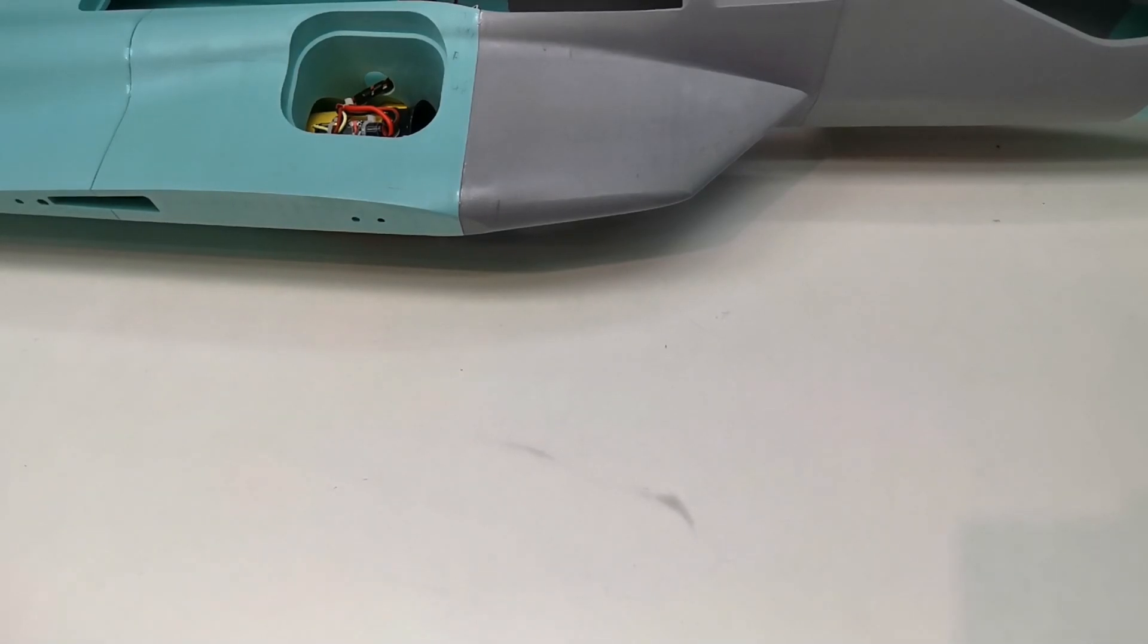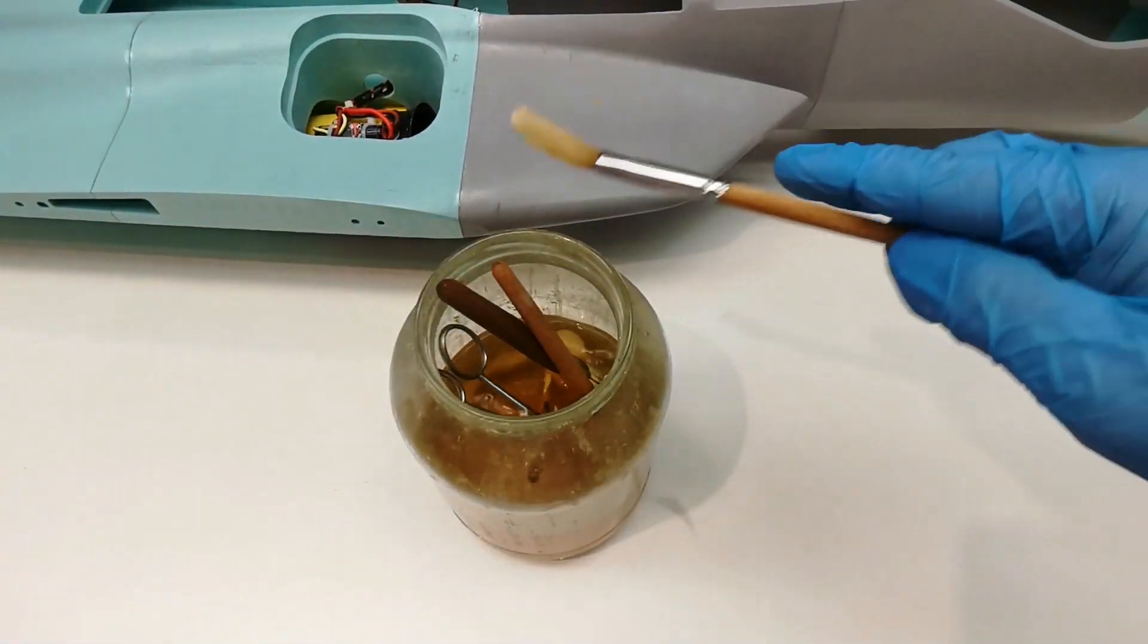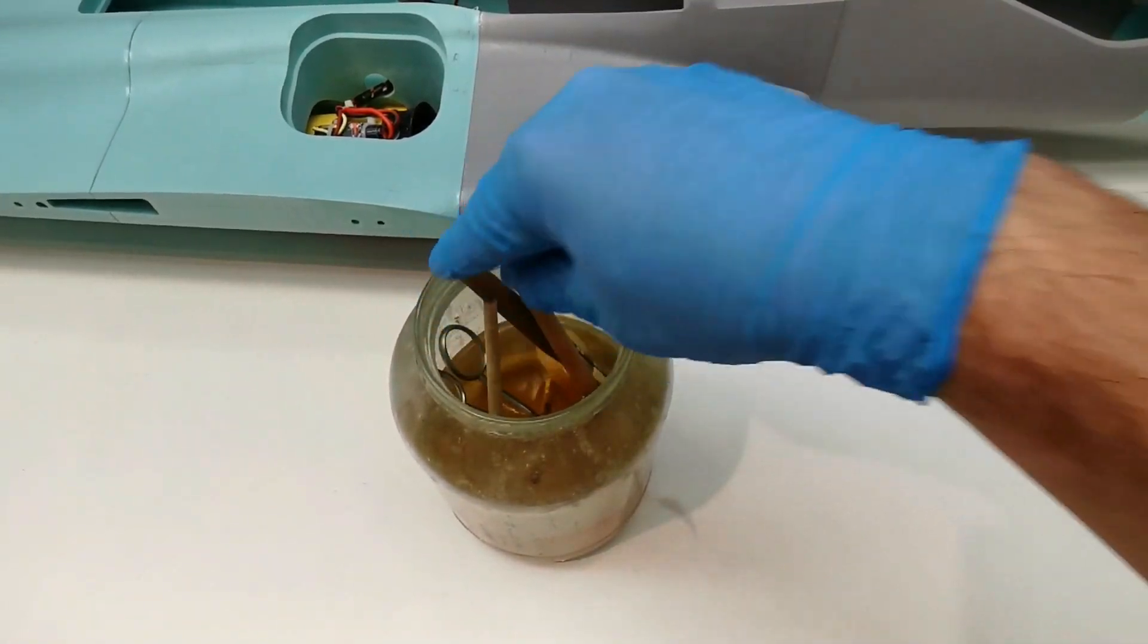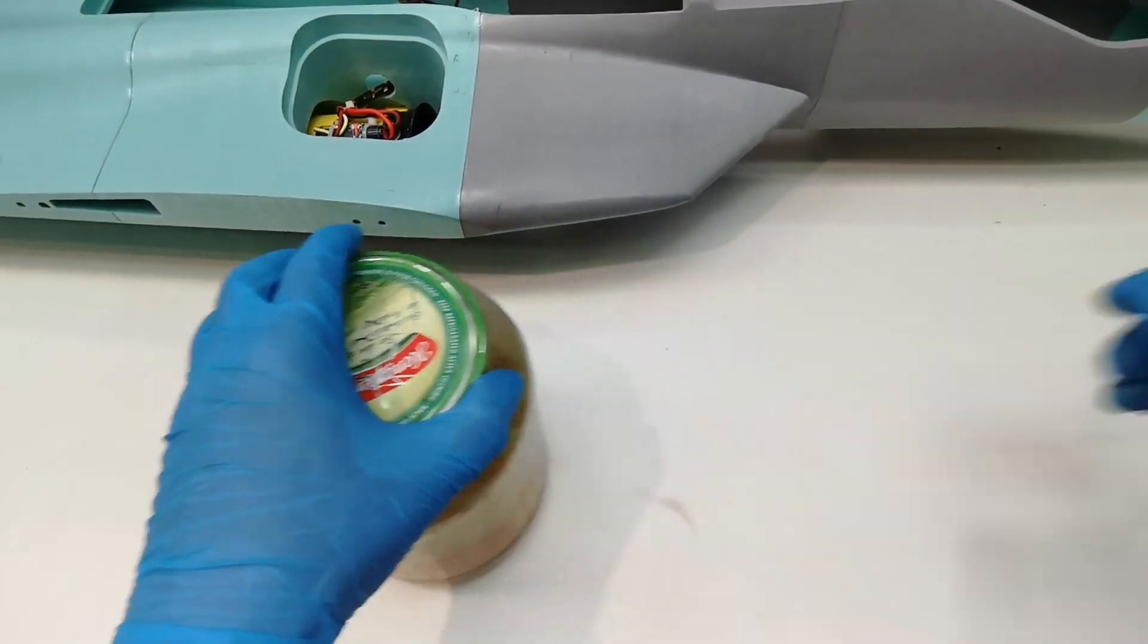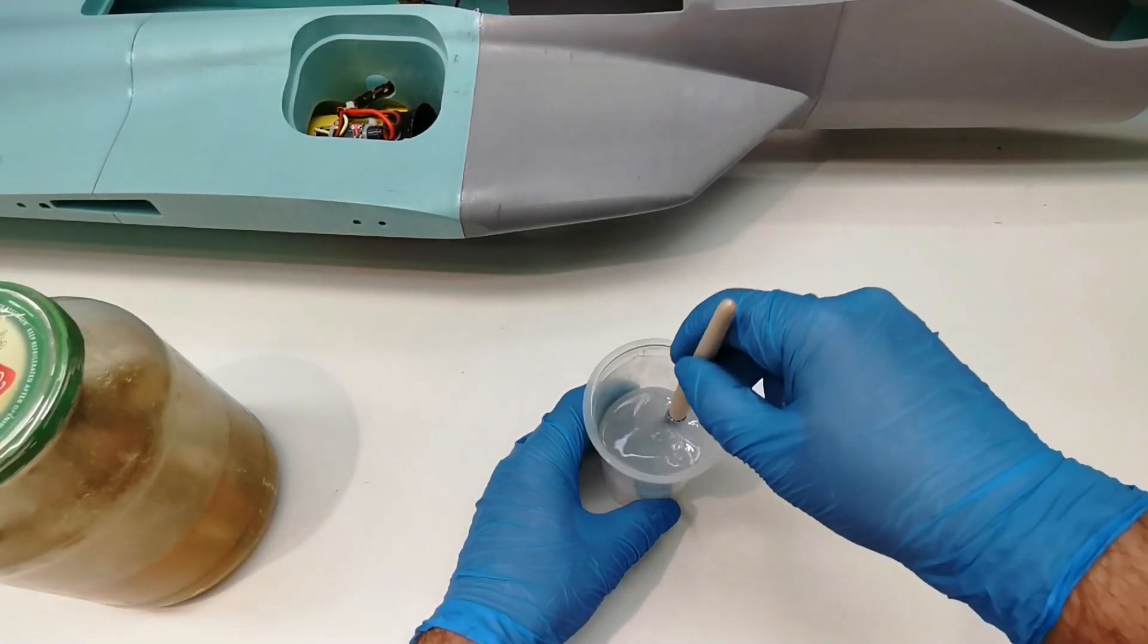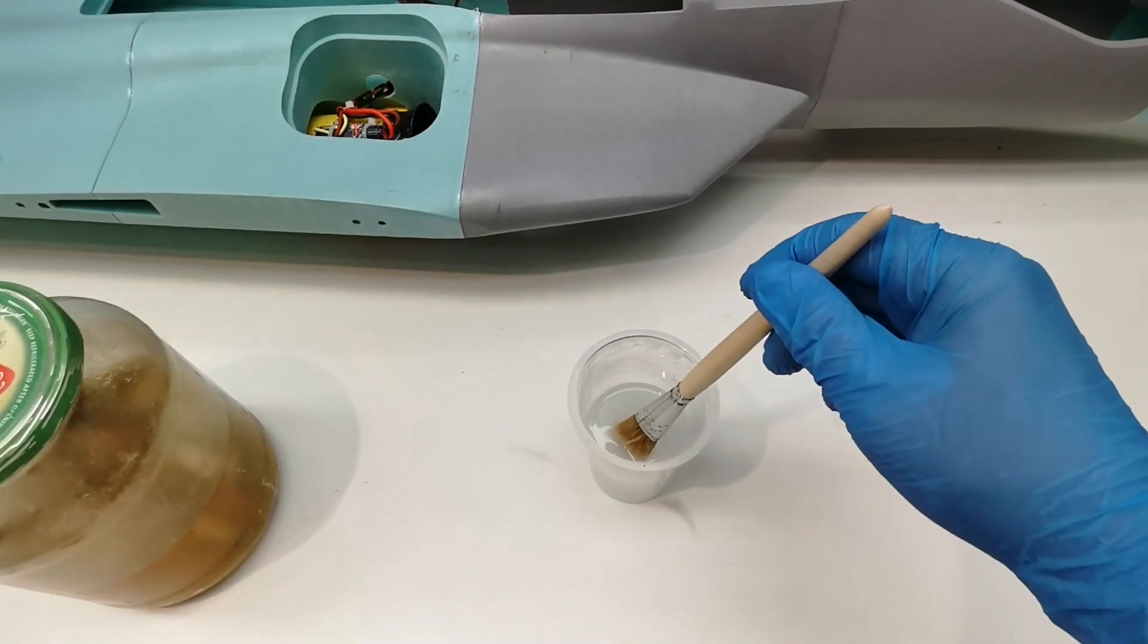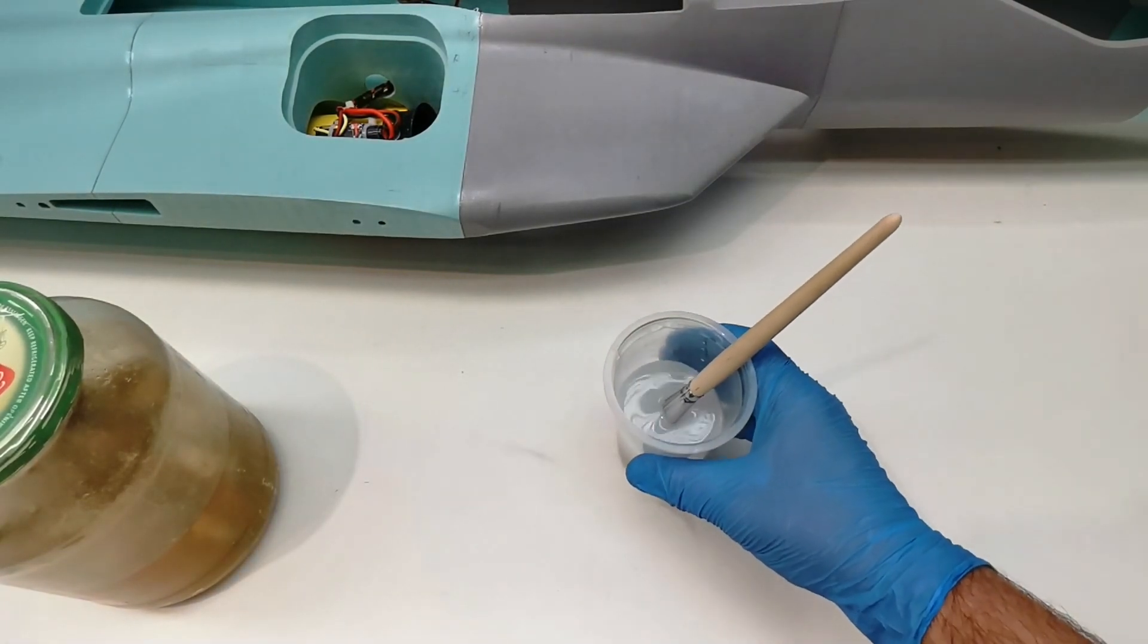Everything is covered. And when it comes to cleaning the tools, the brush from the resin we have to put into a glass of acetone to clean it. And the brush from the varnish we just can use water. So the cleaning process is much easier with the varnish.